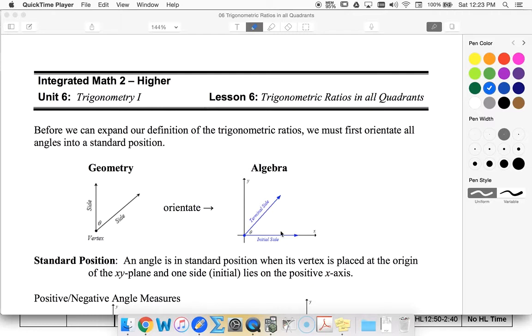So in geometry, our vertex can really be anywhere, and from our vertex, our rays can point out any direction.